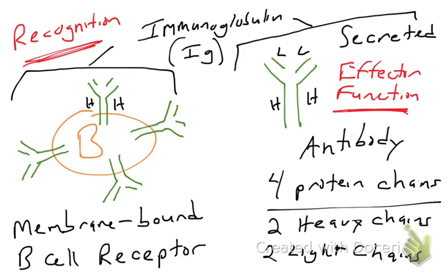That B cell on the left is not attacking any pathogen — it's recognizing the pathogen using the Ig as a B cell receptor. On the right, if that B cell recognized the pathogen, it can unleash the immunoglobulin in its soluble form as a secreted antibody. That has the effector functions, which means neutralization, opsonization, activating complement, etc. We'll go into detail into both how B cells recognize an infection and how antibodies remove pathogens from the body in later videos.